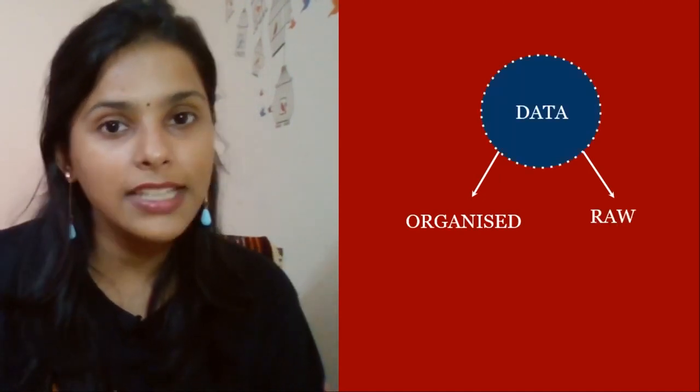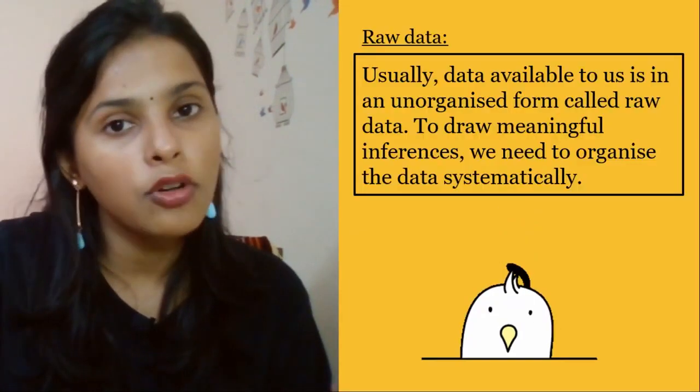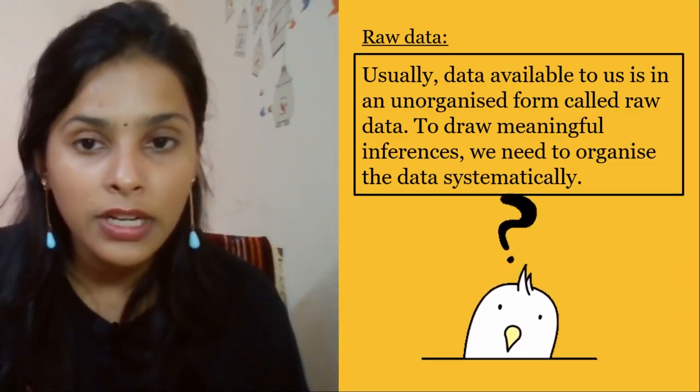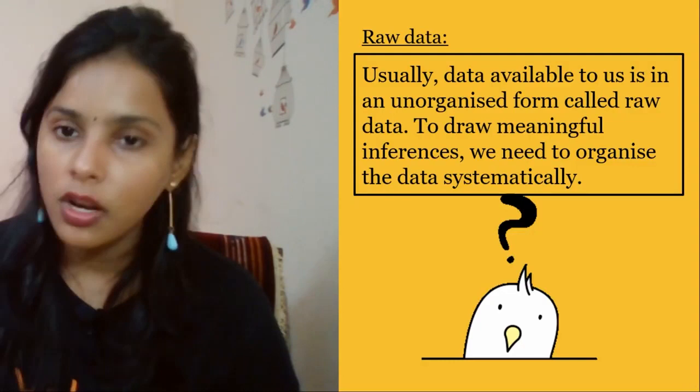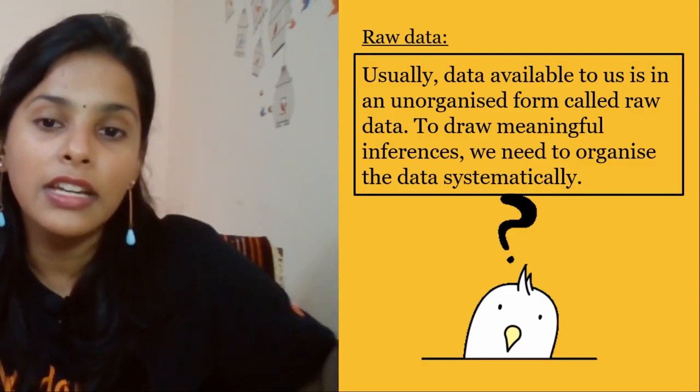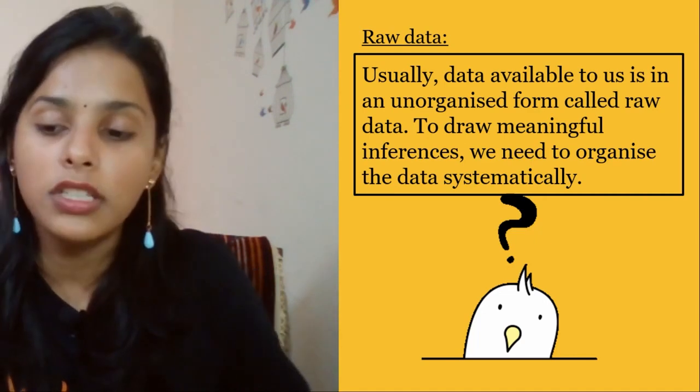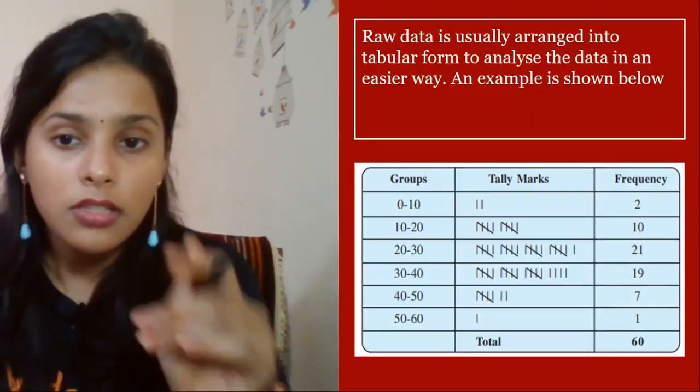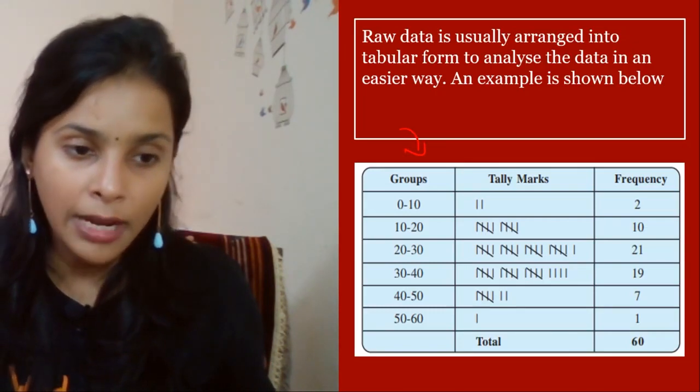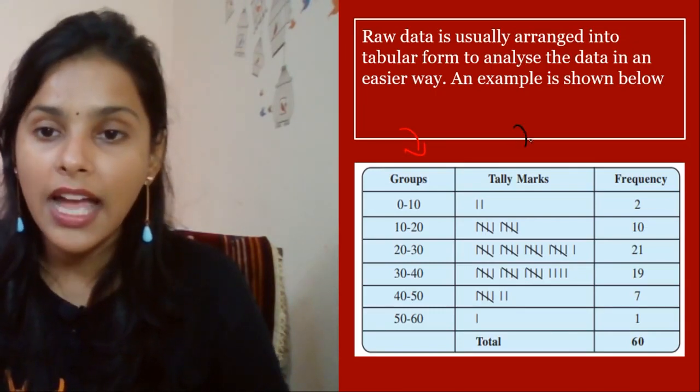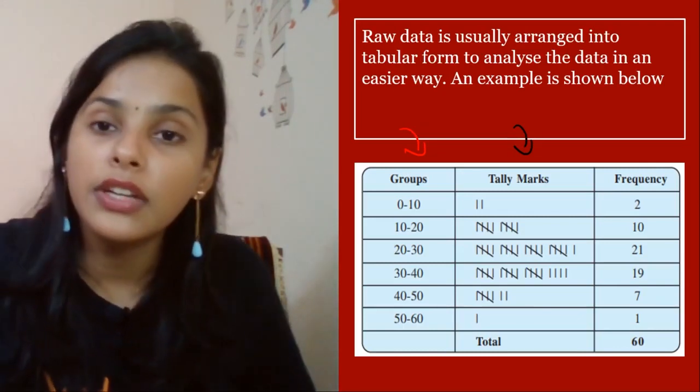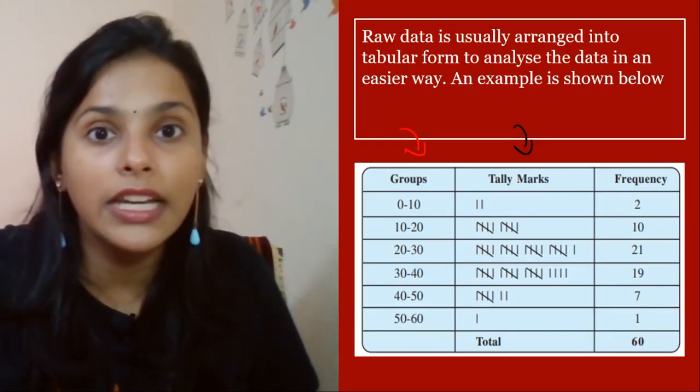Data is in the form of organized and raw, but raw data means data available to us in an unorganized form. To draw meaningful inferences, we need to organize them systematically, which then becomes organized data. Can you see this? We have made data into tabular form. Now this data has been converted into organized data that is readable and we can definitely analyze it.